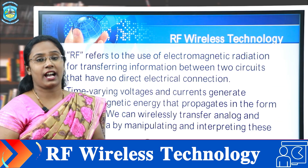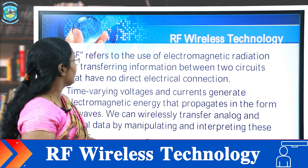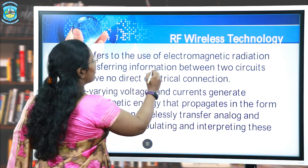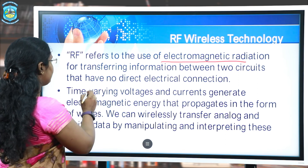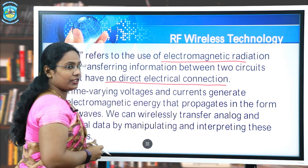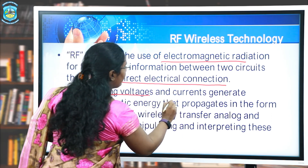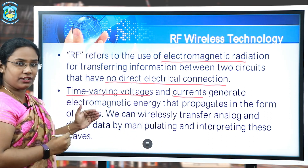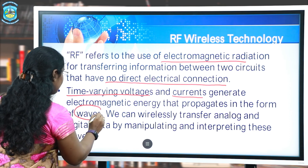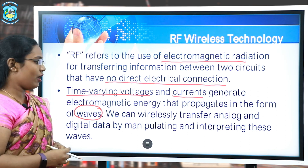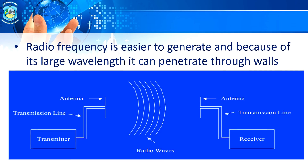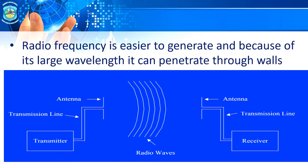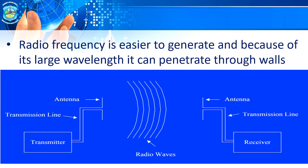The next type of internet connectivity is RF wireless technology, where RF stands for Radio Frequency. It uses electromagnetic radiation for transferring information between two circuits that have no direct electrical connection. The time-varying voltages and currents generate electromagnetic energy that propagates in the form of waves. We can wirelessly transfer analog and digital data by manipulating and interpreting these waves. The benefit of using RF wireless technology is that radio frequency is easier to generate because its larger wavelength can penetrate through walls.